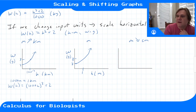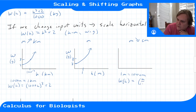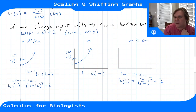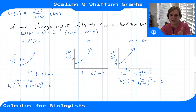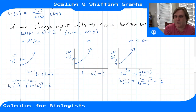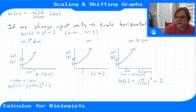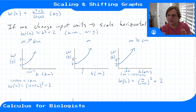Going the other direction — changing meters to centimeters — 1 meter equals 100 centimeters, so our new function becomes (h_cm / 100)² + 2. Now instead of a 1 on the horizontal axis, this will be 100. The graph is horizontally scaled outward, stretched out. So the vertical axis hasn't changed, but we've scaled horizontally in the opposite direction.